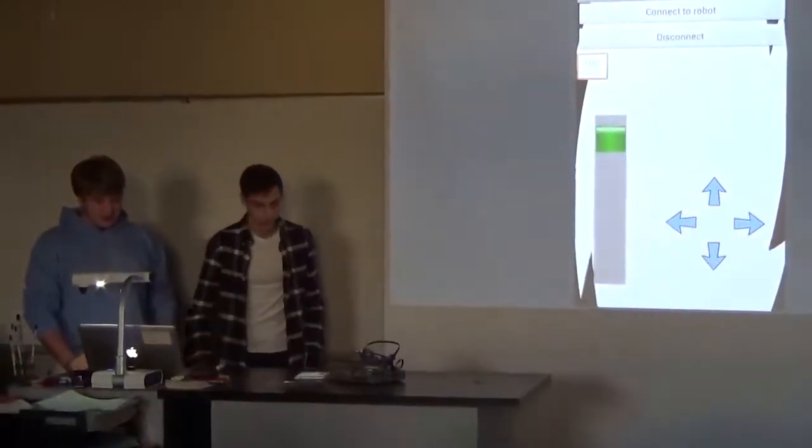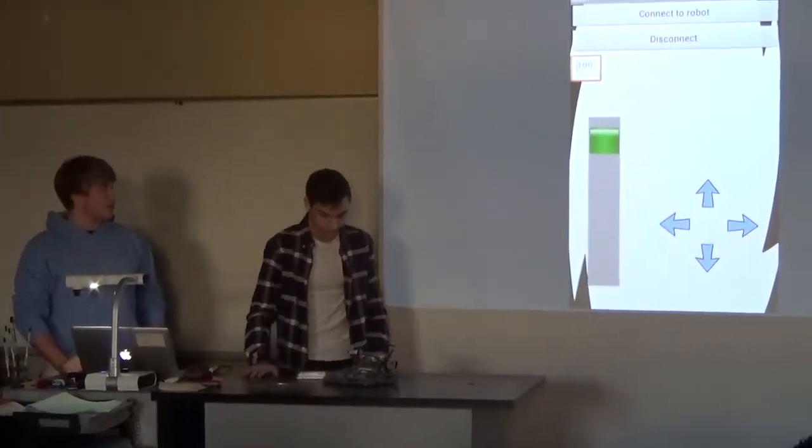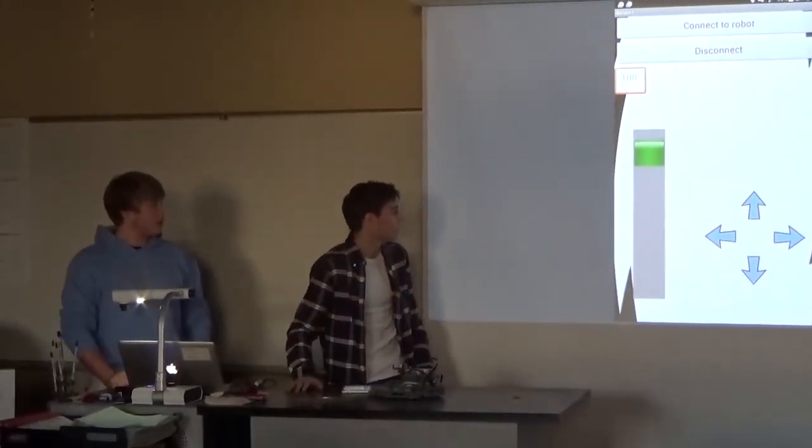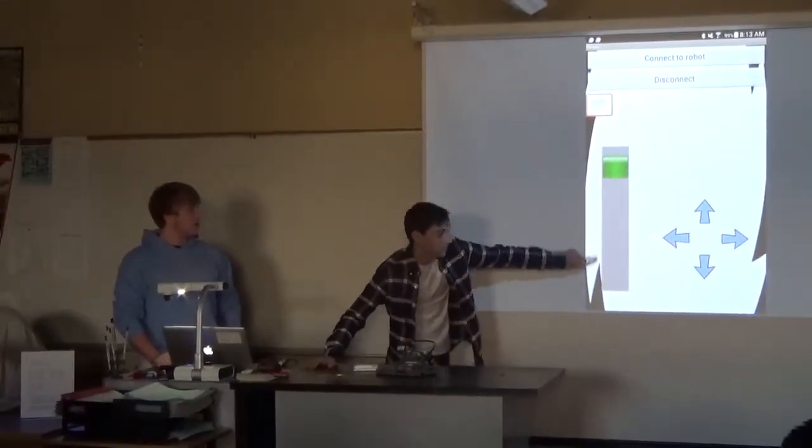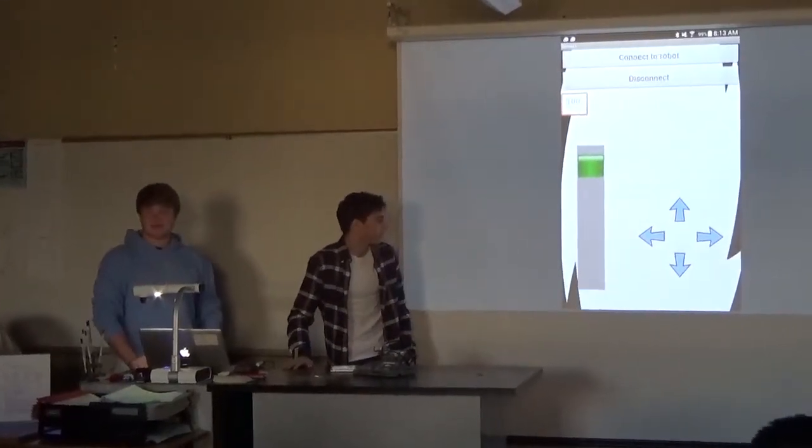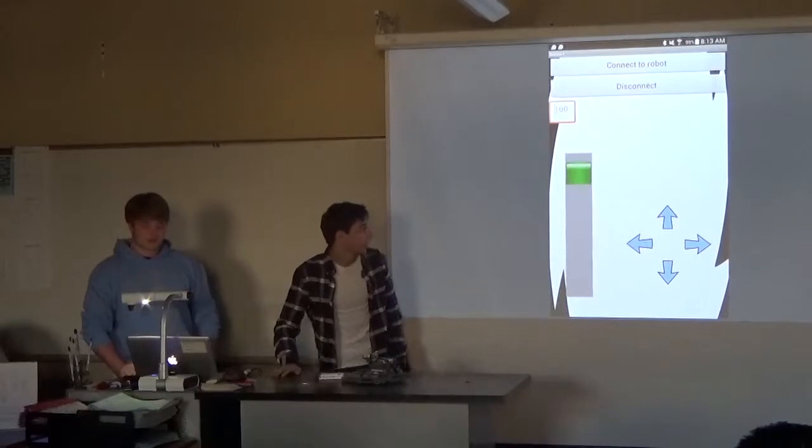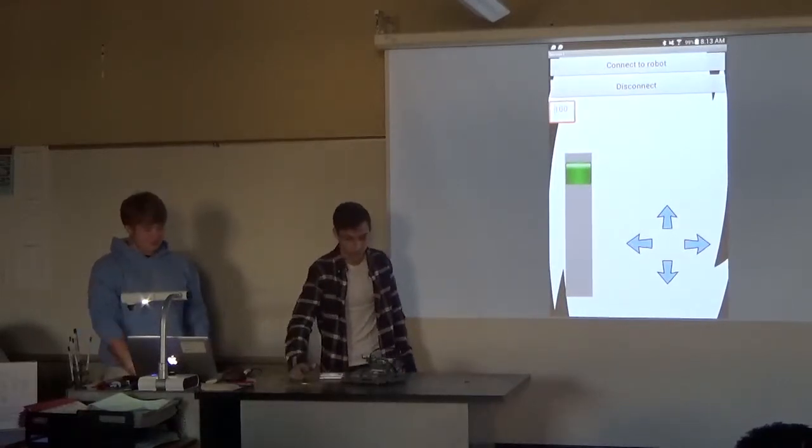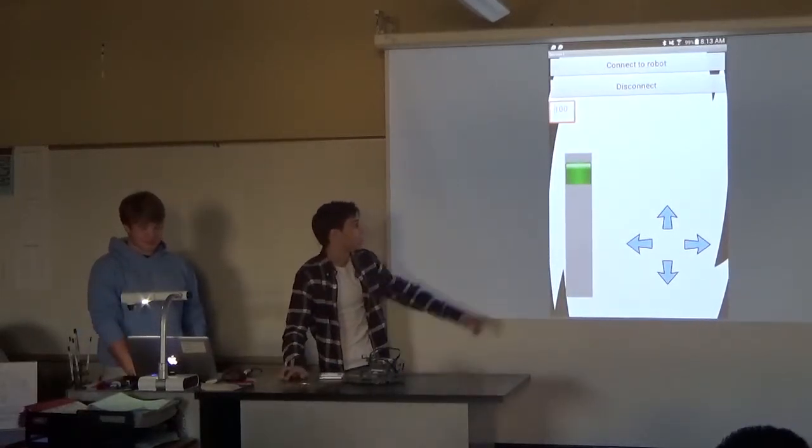So this is our screen. This is our slider button that controls the speed of the robot. And the arrow keys over there, that controls the direction. The top two buttons, you can connect to the robot and disconnect over Bluetooth.